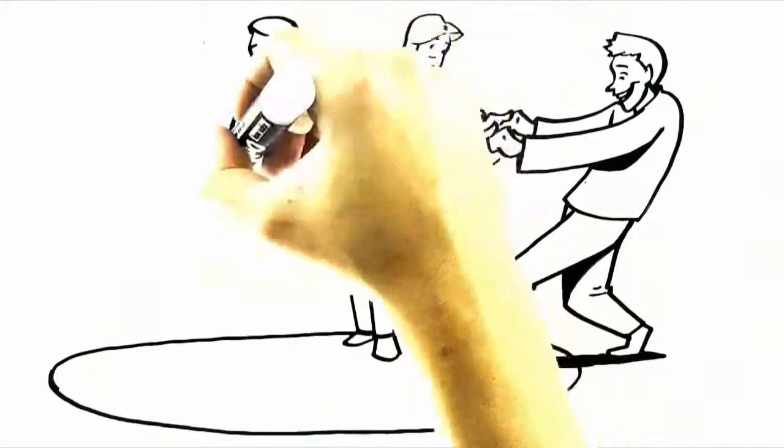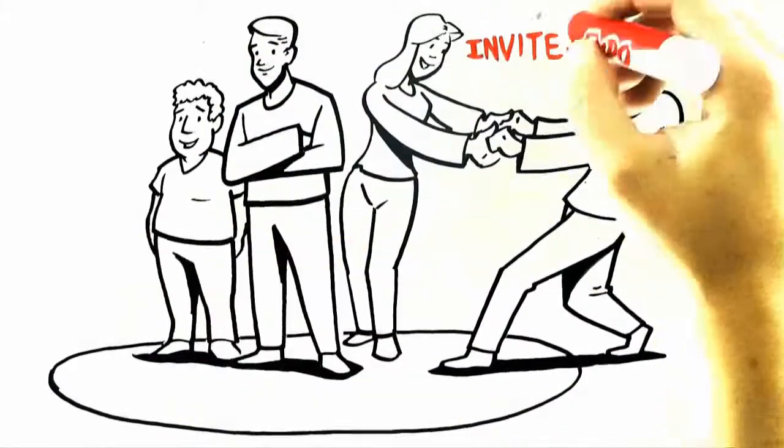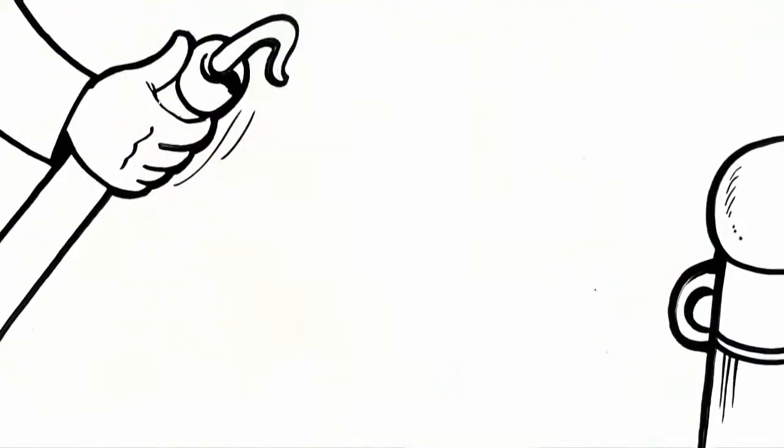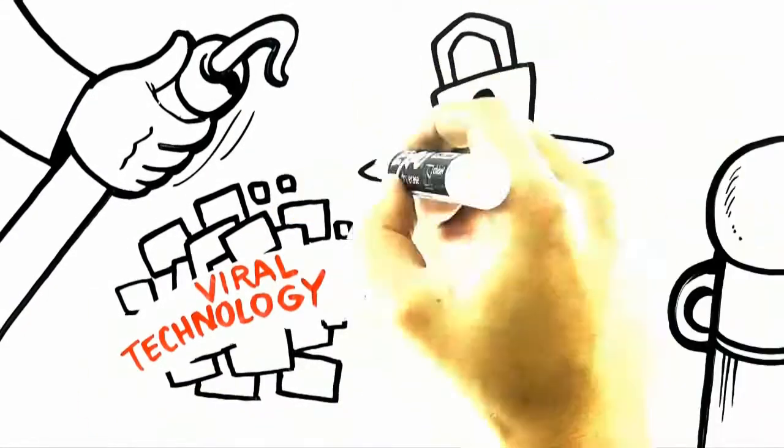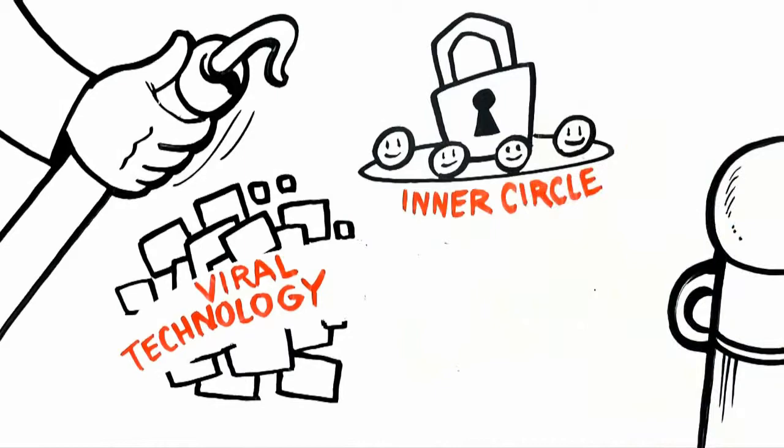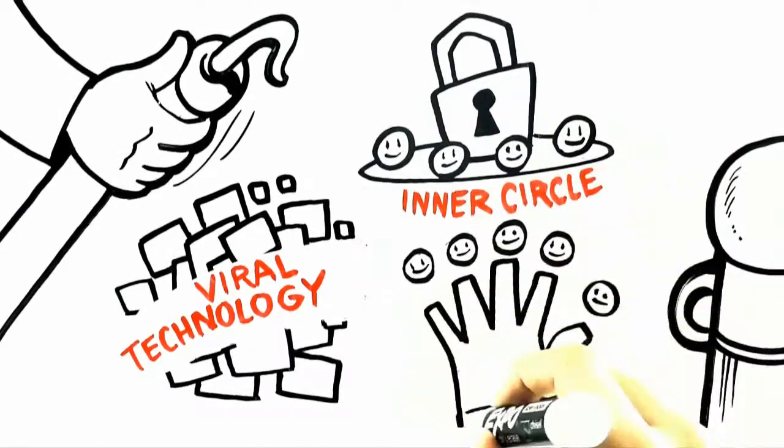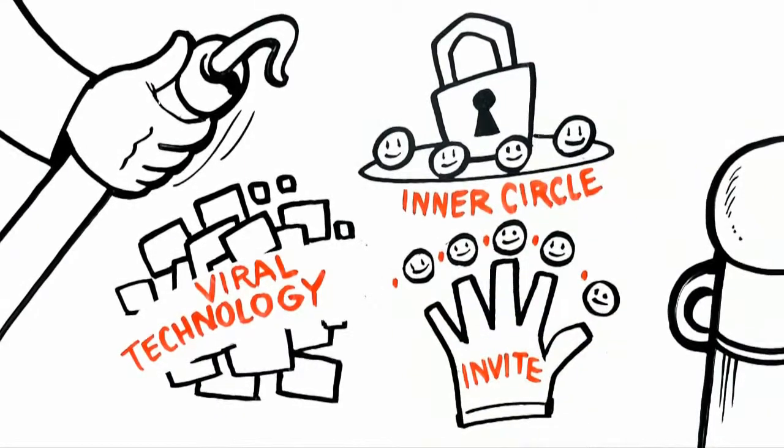Right now you have a chance. Someone who knows and cares about you has invited you into our inner circle, so you can have a sneak peek behind the velvet rope. You're going to be able to: first, see our new viral technology; second, lock in your position in the inner circle of this new company; and third, invite five of your closest friends to join us.